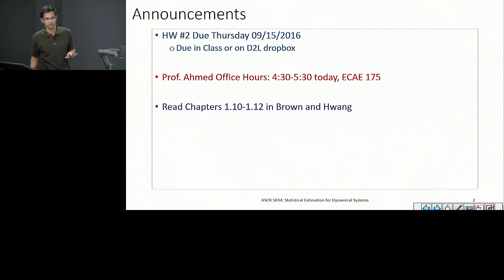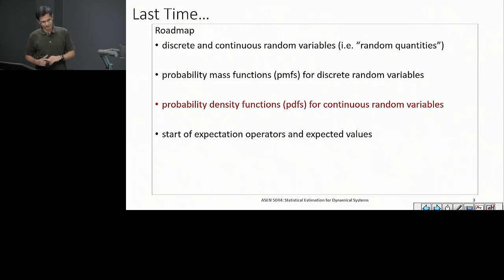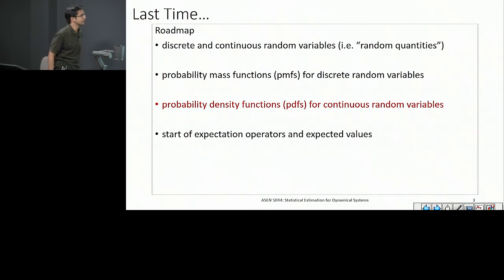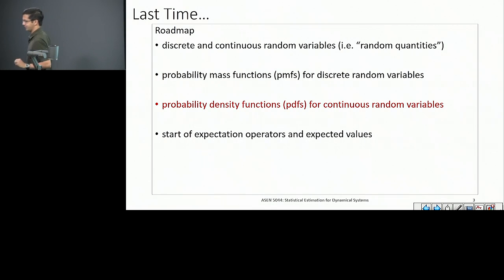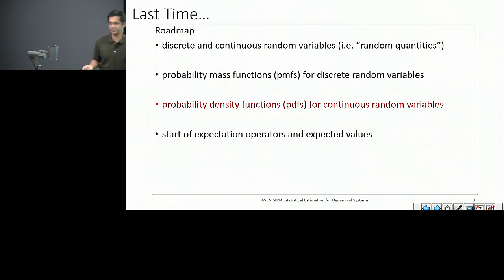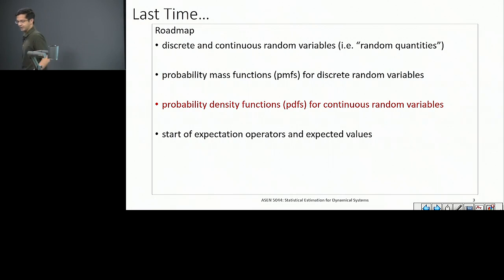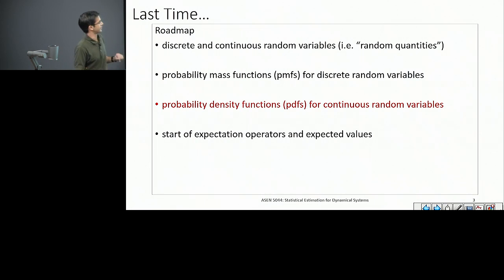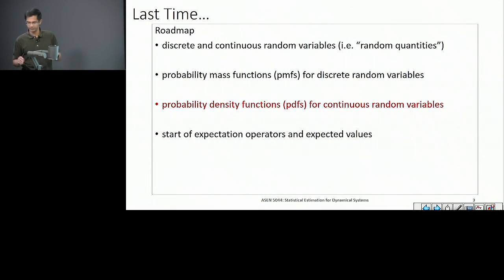Any logistical questions, or shall we move on? All right, continuing. From last time, we started talking about random variables. We discussed discrete and continuous random variables, and we talked about how you could otherwise think of these as just random quantities. Random variables is just a fancy mathematical name for something that you measure for a random outcome or event. You could pick a person in this room at random — that is an outcome of an experiment.